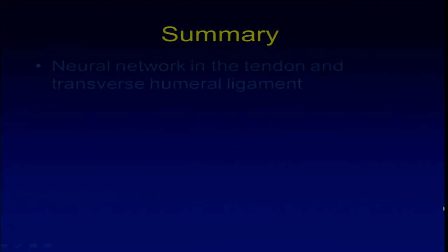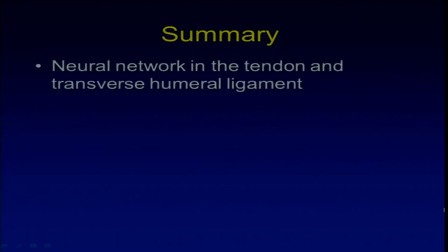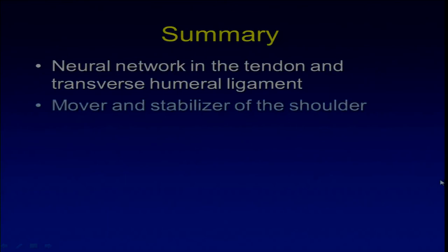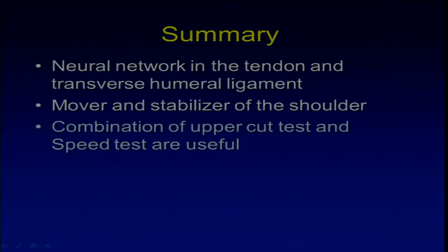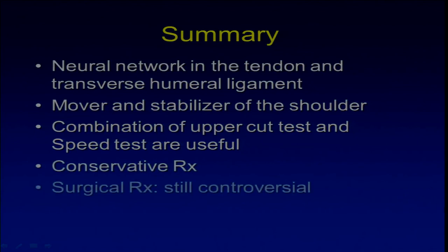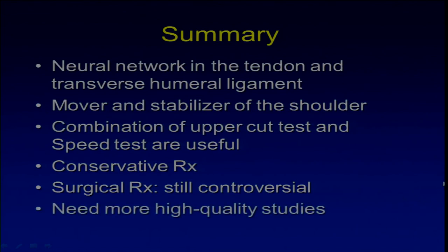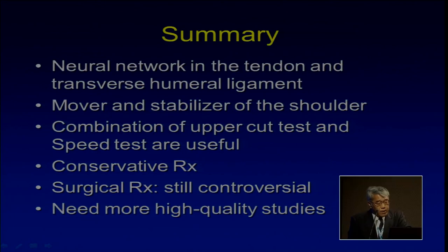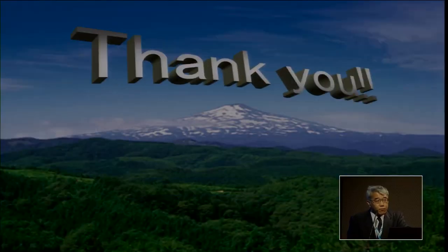In summary: there are neural networks in the tendon and transverse humeral ligament, and the biceps is a mover and stabilizer of the shoulder. The combination of uppercut and Speed tests is useful for diagnosis, and conservative treatment should be applied first. For surgical treatment, it remains controversial and we need more high-quality studies. Thank you very much for your attention.